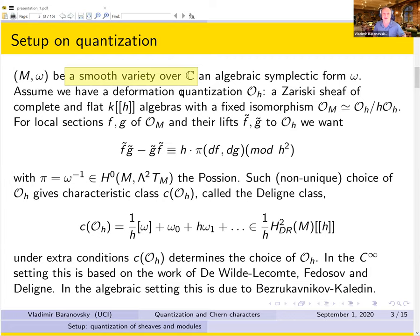The sheaf of regular functions is a sheaf of commutative algebras over ℂ. When we quantize it, we try to find a Zariski sheaf O_H — a sheaf of rings over formal power series ℂ[[h]]. Modulo h it reduces to our structure sheaf, and we want this sheaf of algebras to have a non-commutative product compatible with the choice of symplectic form.